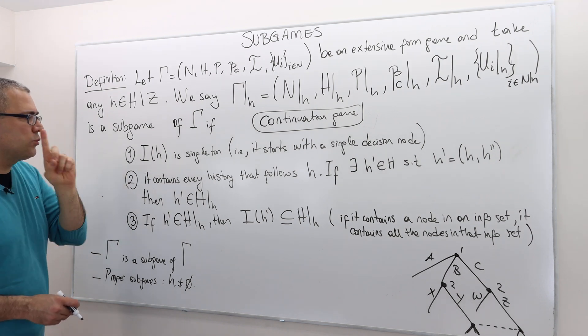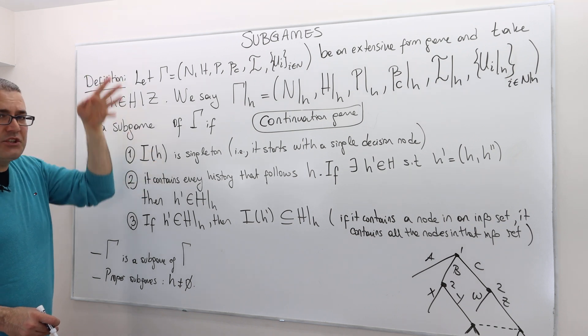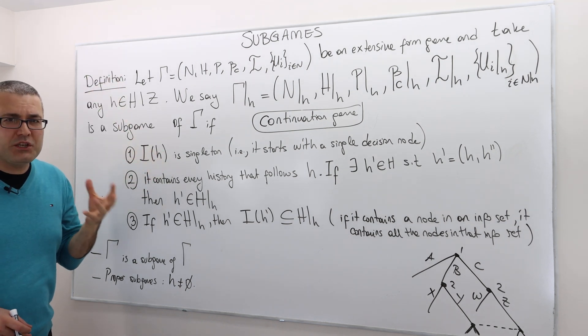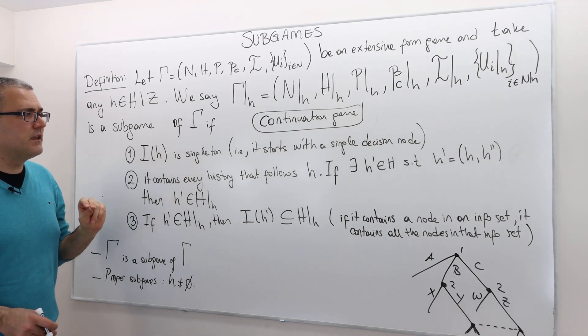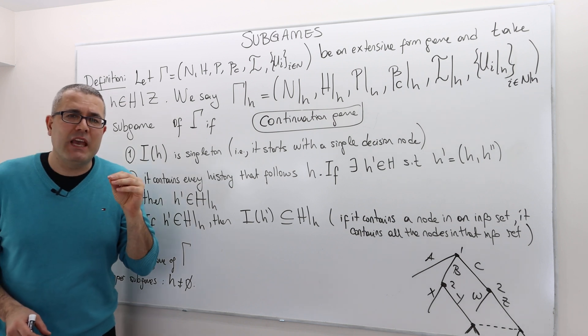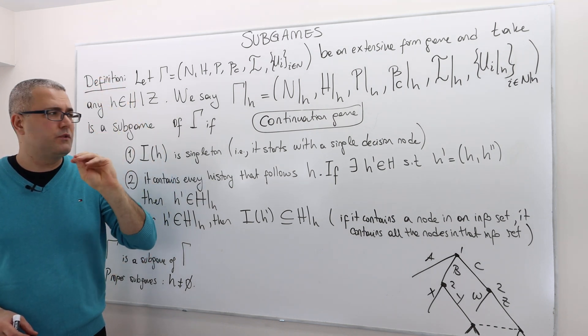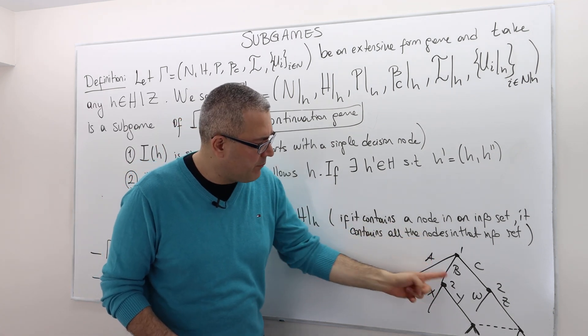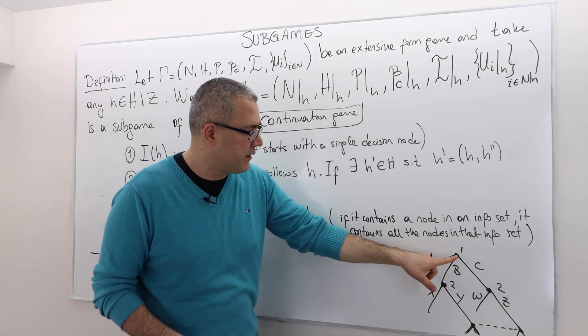What are those three properties? One, the history H is going to lead to some information set. This information set must be singleton, meaning a subgame must start with a single decision node. So, consider this game. Player 1 moves A, B, C. And then here, after A, the game is over.